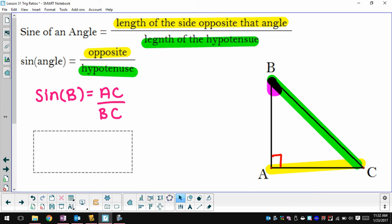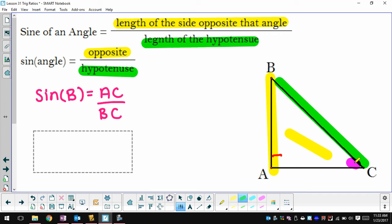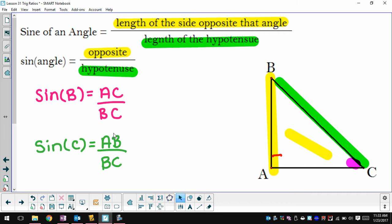So if I then want to look at the sine of angle C, let me erase, the sine of angle C is the side opposite of it, which in this case is AB. The hypotenuse stays the same, so the sine relationship for angle C is the length of AB divided by the length of BC.